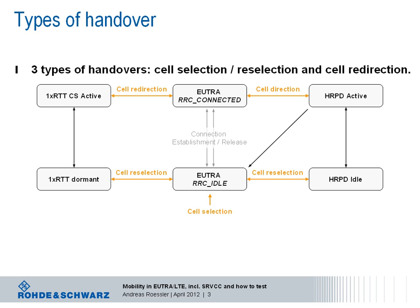An example would be a network operator that provides macro network coverage on frequency band 20, which is used in Europe in the 800 MHz range. The operator may also have deployed smaller pico cells in band 7, a European band at frequencies around 2.6 GHz. In this example, the cell redirection could happen from band 20 (800 MHz) to band 7 (2.6 GHz). This would be called inter-frequency handover.